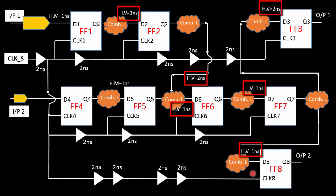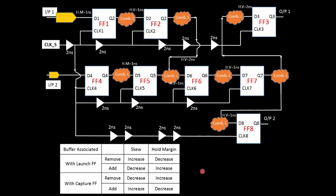Before I start, let's review a few things important for this and the next two lectures. I have divided the approach into three methods — one discussed here, and the next two in the following lectures. Adding a buffer in the clock path of the capture flip-flop, or removing a buffer from the clock path of the launch flip-flop, will in both cases increase the clock skew.